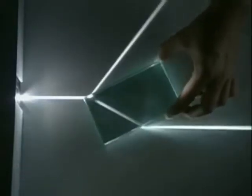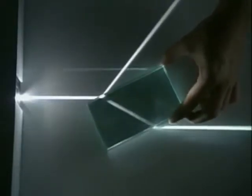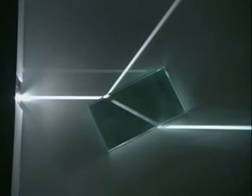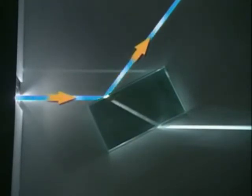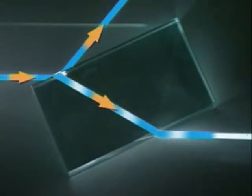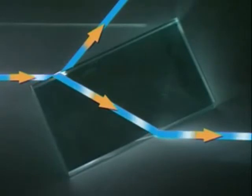Place a glass block in its path and the beam starts to behave differently as the block is rotated. Some of the light is reflected, the rest passes into the glass. The light bends in one direction as it enters the block and in the other as it emerges from the lower edge. This shift in direction is called refraction.